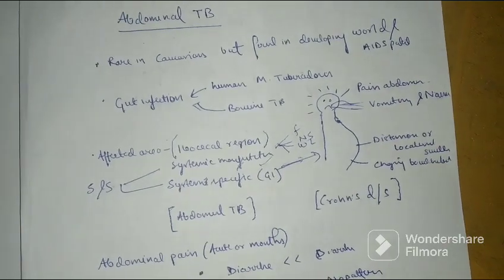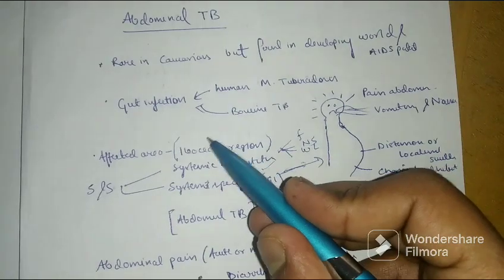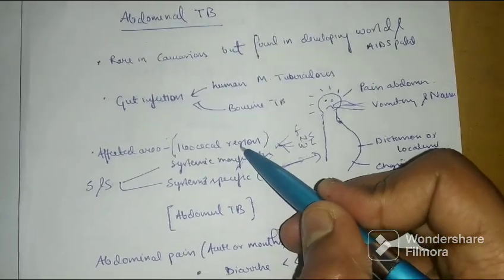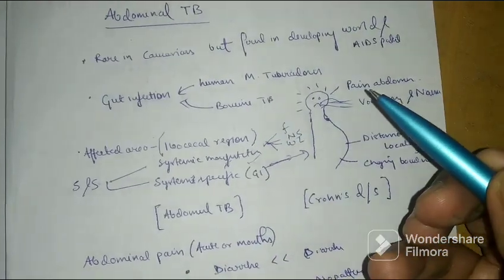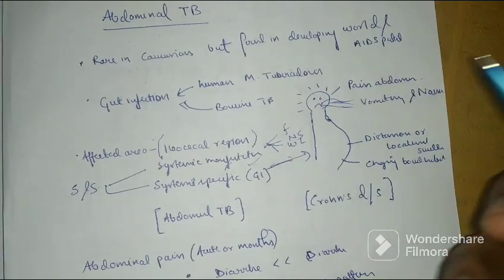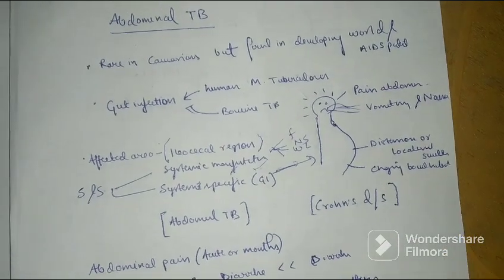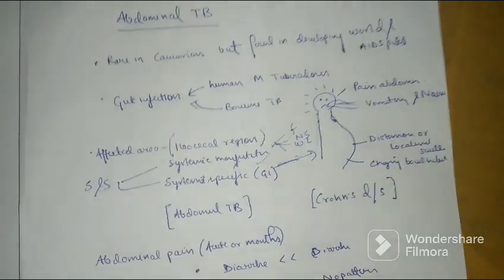System specific manifestations depend on the involvement. Most commonly the ileocecal junction is involved. There can be involvement of peritoneum, hepatobiliary region and what not. Anything in the GIT can be involved.